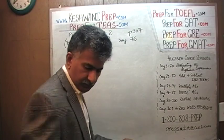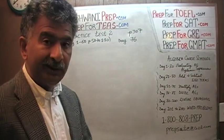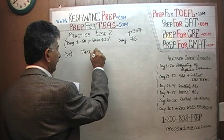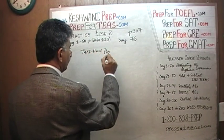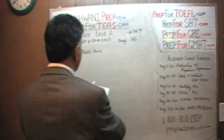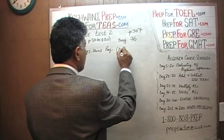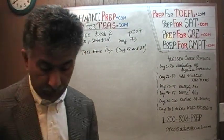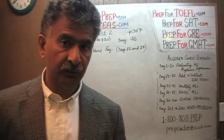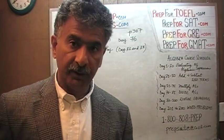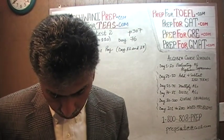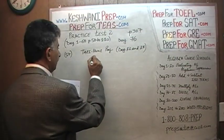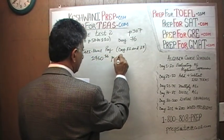The first problem we are going to do is problem number 17, which has to do with take-home pay. We have to calculate take-home pay for this individual. We are told that we have a medical assistant who receives $1,460.16 per pay period.